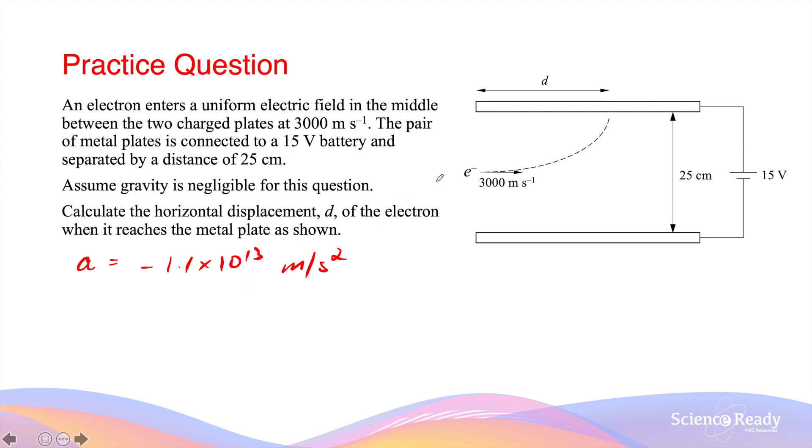This enormous acceleration is acting upwards towards the positive charged plate. To work out the horizontal displacement of the electron, we need to employ the kinematic equations that we've learned in projectile motion from module 5. The first one I will go with is Vy squared equals Uy squared plus 2AySy. Notice how all my vectors, my velocities, both final and initial, as well as the displacement and acceleration, are in the vertical direction. So Vy squared is the vertical component of velocity when the electron reaches the positive charge plate.